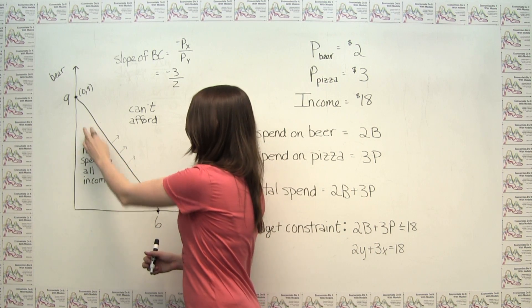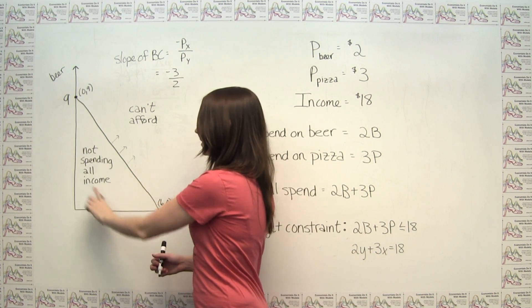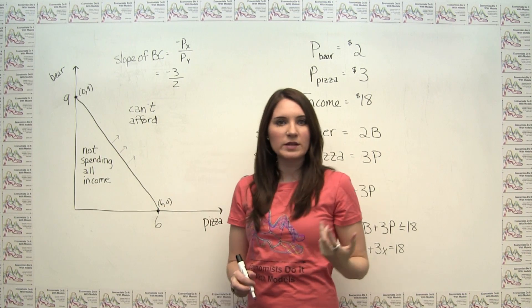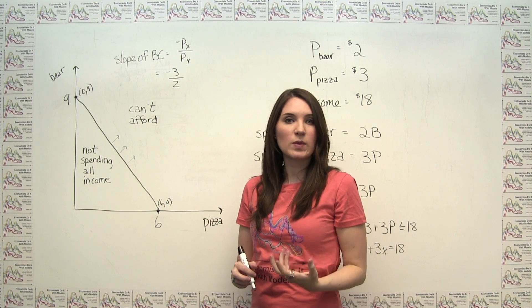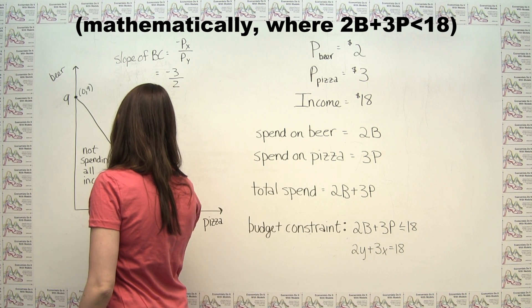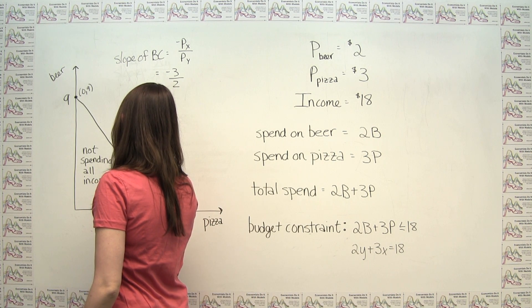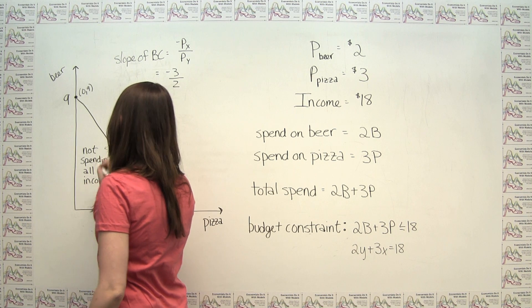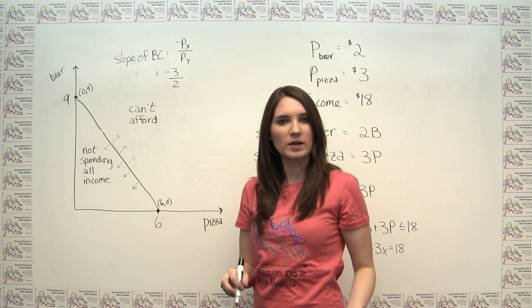On the other hand, the points that are strictly inside this budget line are the points where the consumer is not spending all of her income. Because we can notice that the points inside are the ones where she's consuming less than she would be if she was spending all of her money.